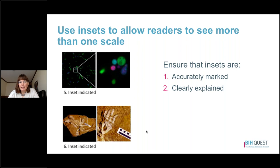Sometimes we need to see more than one scale to answer the research question. In this case, a common technique is using insets — showing an image at a larger scale and then a zoomed-in subsection of that same image to allow us to see finer detail. When using insets, we want to ensure the inset is both accurately marked and clearly explained. We saw numerous examples of problems with how insets were used in scientific papers.